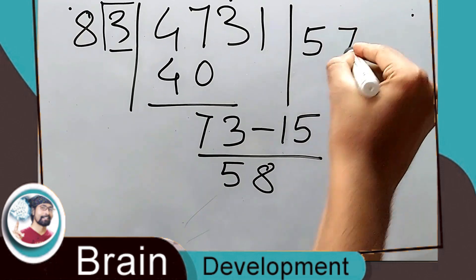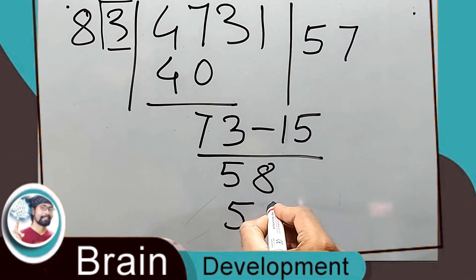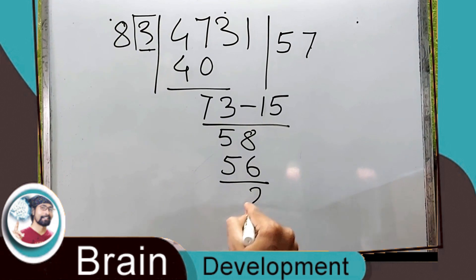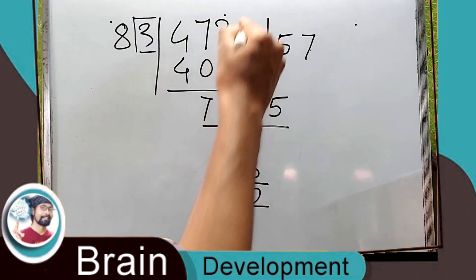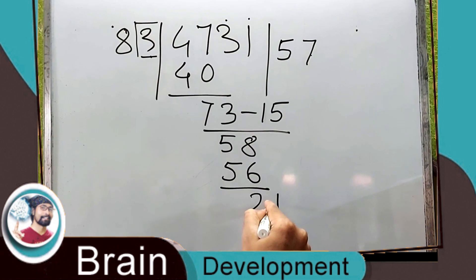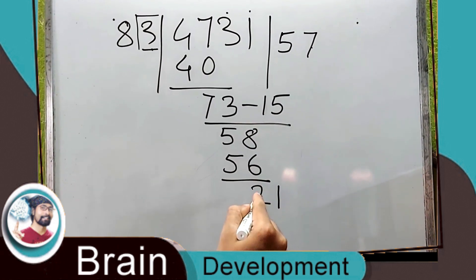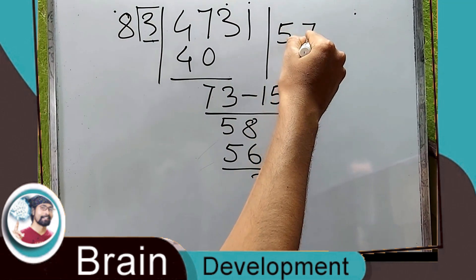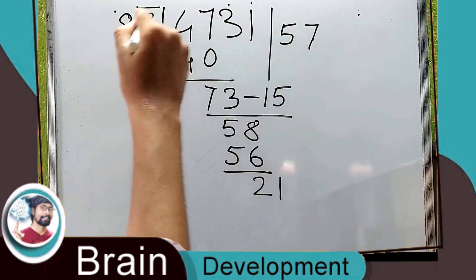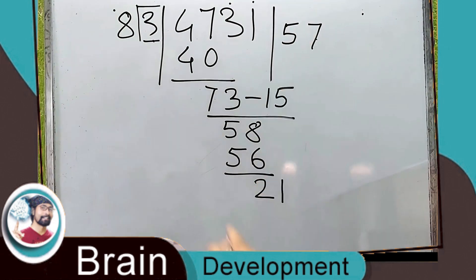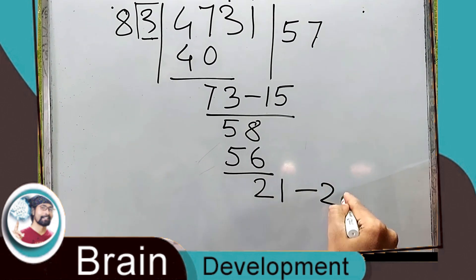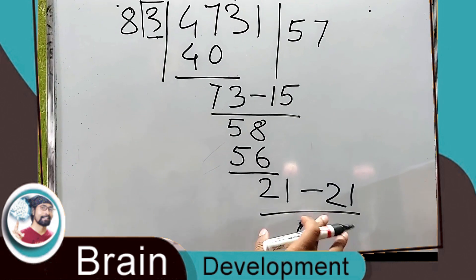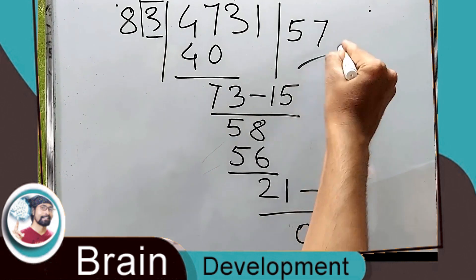Eight sevens are 56, so 58 minus 56 is 2. Now this 1 will come down, so it's 21. We know the process: the 3 has to be used again. This time seven — previously it was multiplied with five, now three into seven is 21.